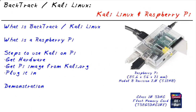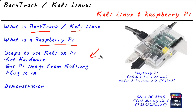Our objectives in this micronugget are really simple: to describe what this Linux distribution called Backtrack or Kali is, what a Raspberry Pi is, how we integrate the two together and why we would want to, and then a quick demonstration of Kali on a Pi in action.